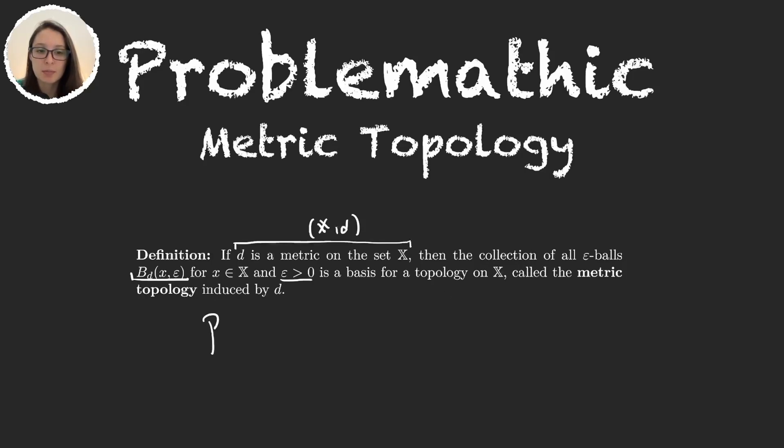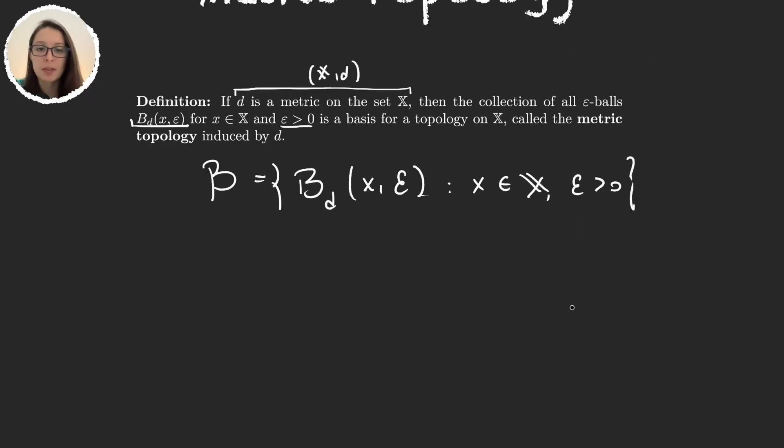So the basis B is going to be just a set of balls defined with this metric. If you don't remember, the balls Bd with center in x and radius epsilon is just the set of all the elements in the space for which the distance between x and y is smaller than epsilon.